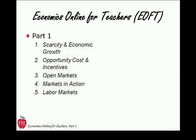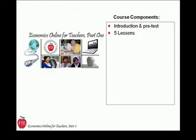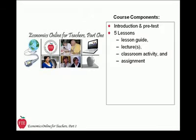Together, the five lessons in EOFT 1 introduce the tools of economic reasoning and institutional analysis. The partner course, should you decide to take it, is called EOFT Part 2, and it continues the analysis with five more lessons — on entrepreneurship and innovation, property rights and the environment, money, the role of government, and international trade.